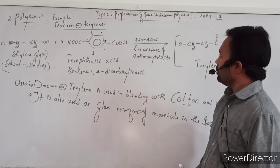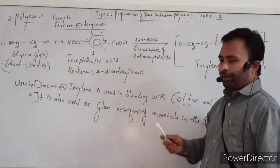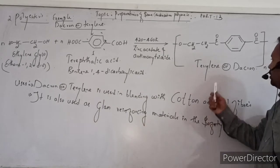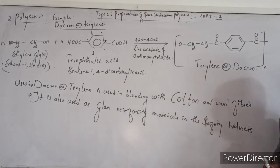When both are condensed in the presence of zinc acetate and antimony trioxide as a catalyst at a temperature of 420 to 460 Kelvin, then we will get one of the polyesters called Terylene or Dacron.